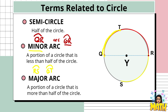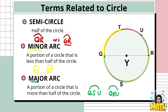If we have a portion of a circle that is more than half of the circle, that is what we call a major arc. For example, from point Q up to point U. To avoid confusion when naming a major arc, we use three letters: the first letter is the starting point, the last letter is the ending point, and the middle letter is any point on the arc. So we can have arc QSU or arc QRU as examples of major arc.